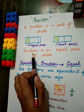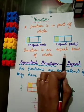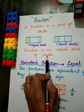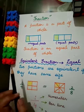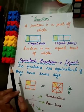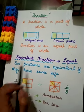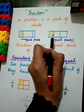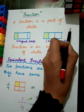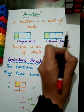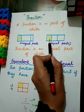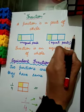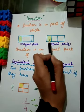So the complete definition of fraction is: fraction is an equal part of a whole. Now, the shaded part we write on the upper side (numerator) and the total parts we write on the lower side (denominator), so it will be 1 by 3.